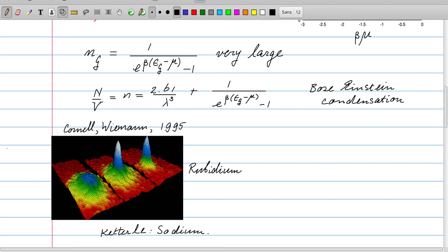This picture which was made in 1995 by Cornell and Wieman is very famous in the context of Bose-Einstein condensation. In the experiment, which was a technological breakthrough, they had to reduce the temperature of atoms, in this case rubidium atoms, tremendously, and then they increased the density of rubidium atoms.